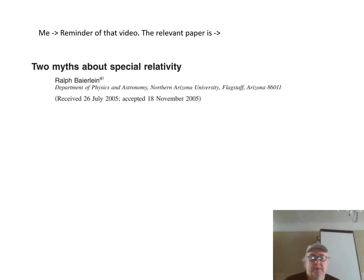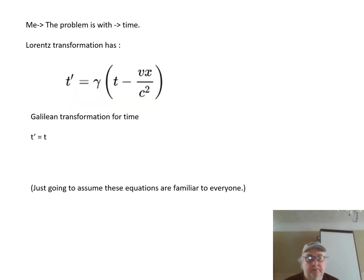So this is a reminder of the relevant paper which was dealt with in the video, and it's the problem with time in the Lorentz transformation. I'm just going to assume you are familiar with these equations. You have the Lorentz transformation, that's the first equation there, and the Galilean transformation, the time is the one below that.